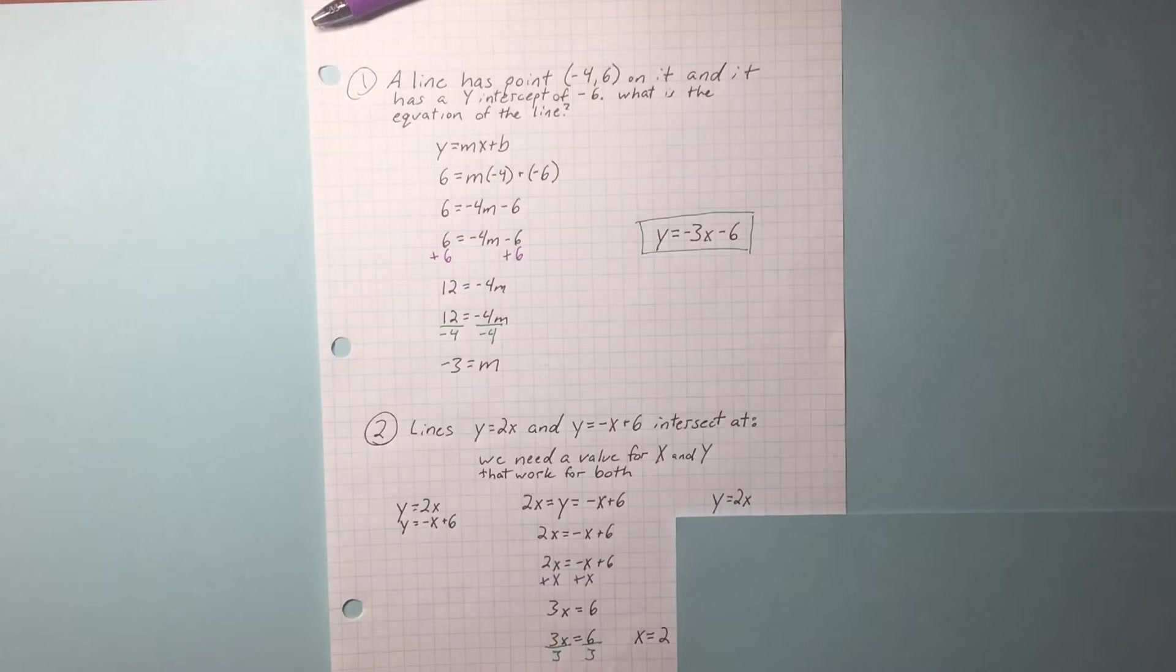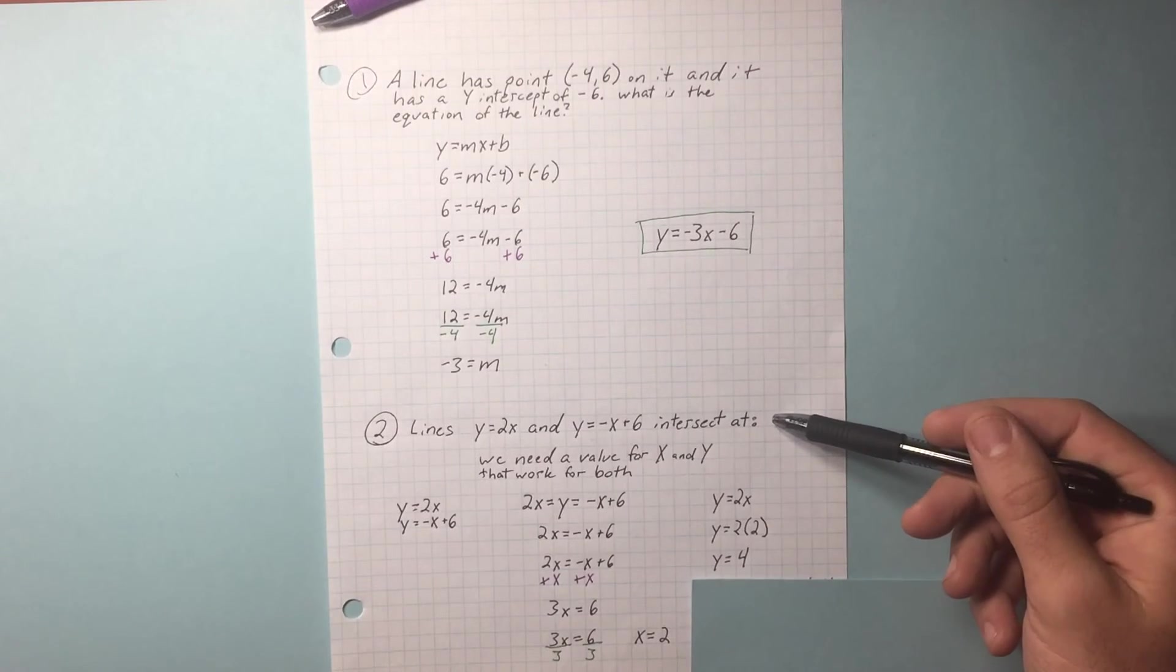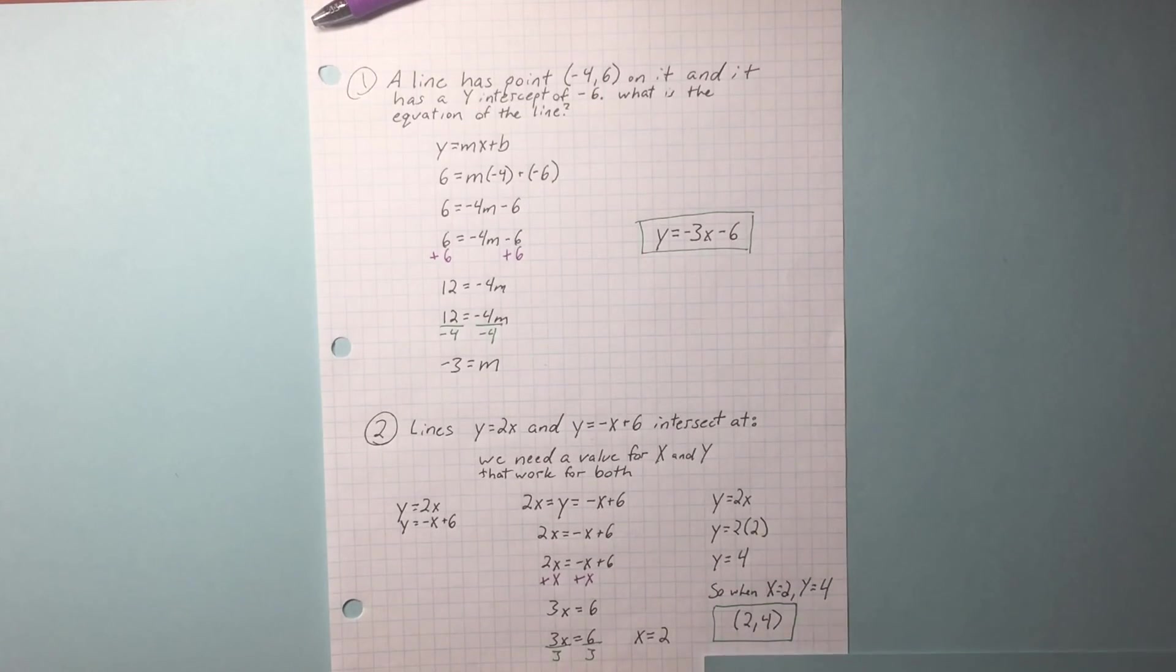y equals 2x, but now we know x. Plug it back in. y equals 2 times 2. y equals 4. Where do these two lines intersect? At 2 comma 4.